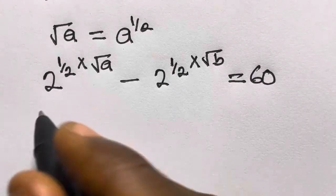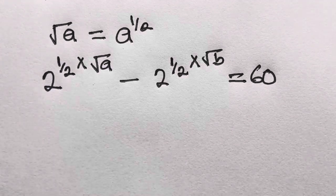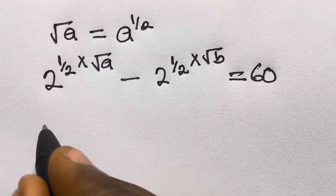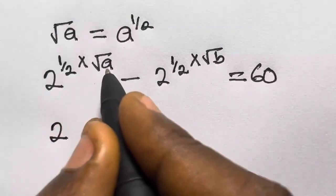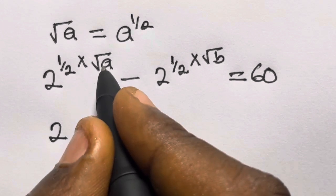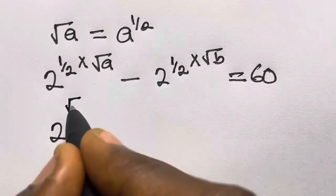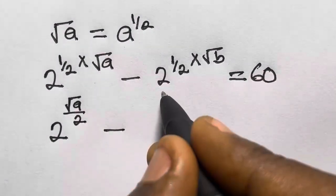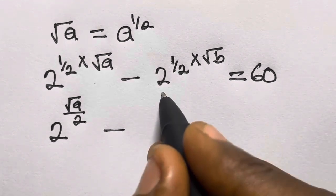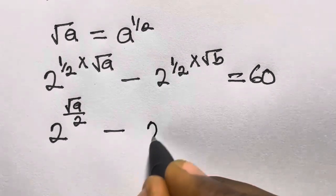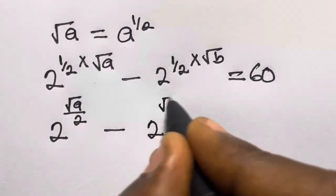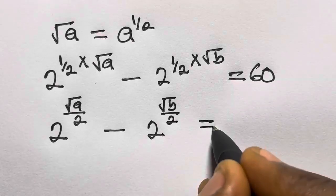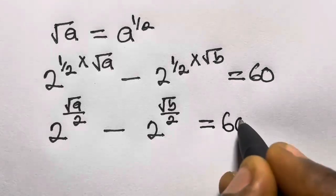If we simplify the exponents, we are going to have 2 raised to the power square root of a divided by 2, minus 2 raised to the power square root of b divided by 2, equals 60.